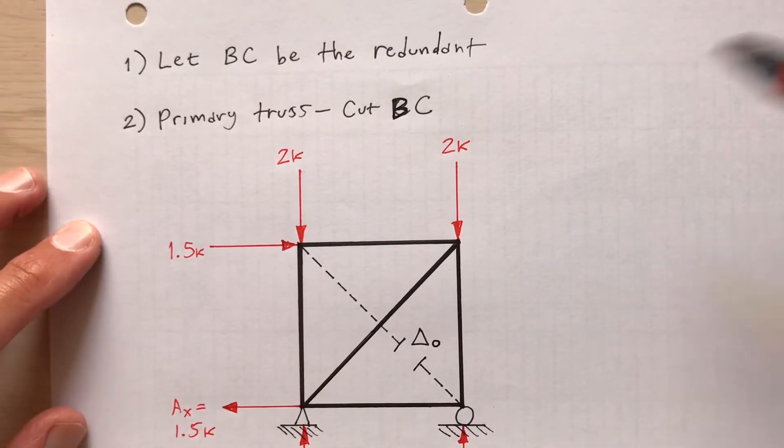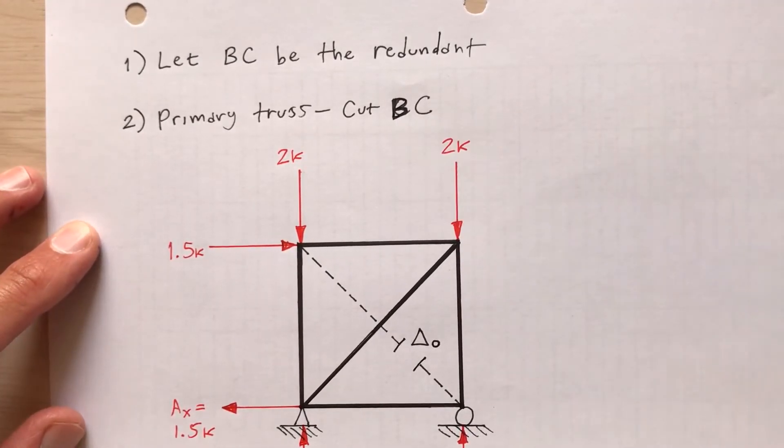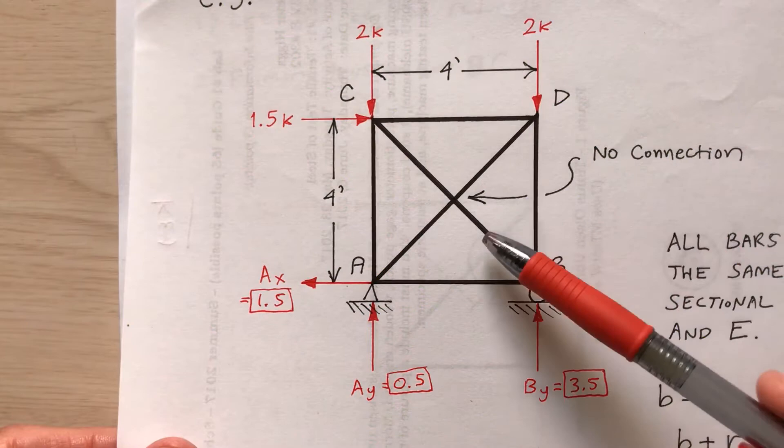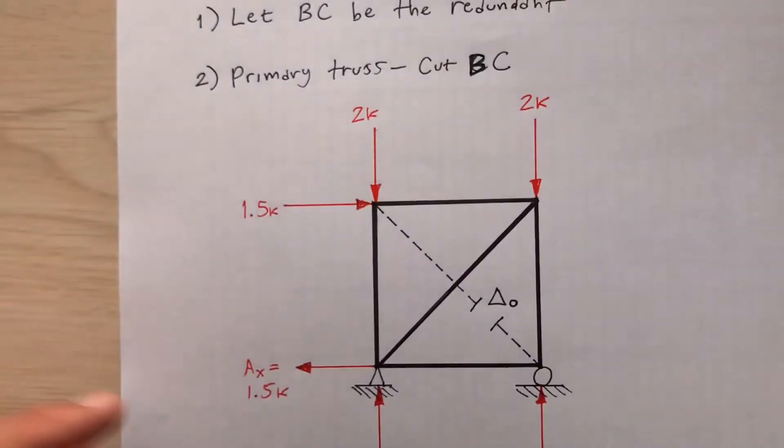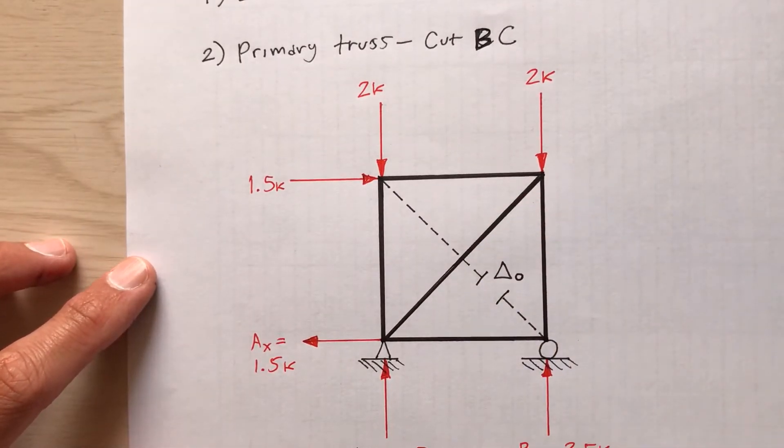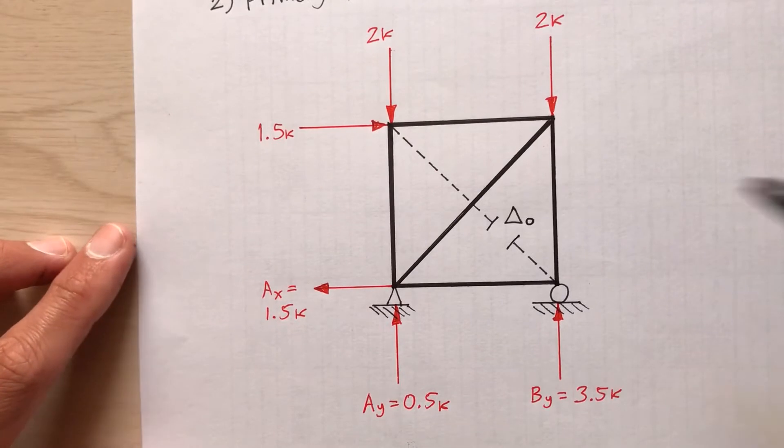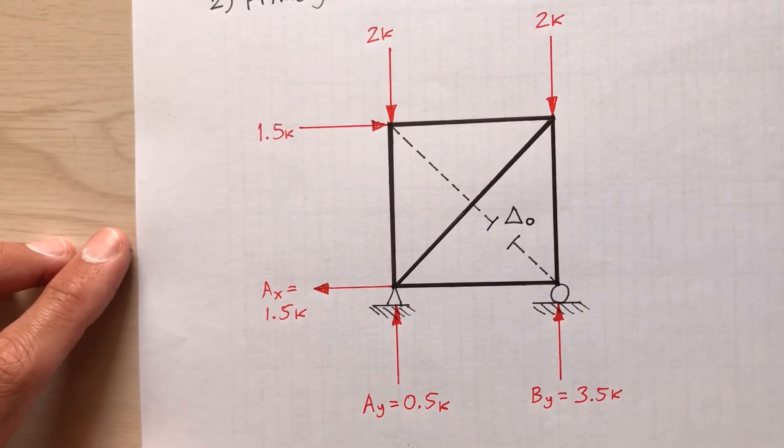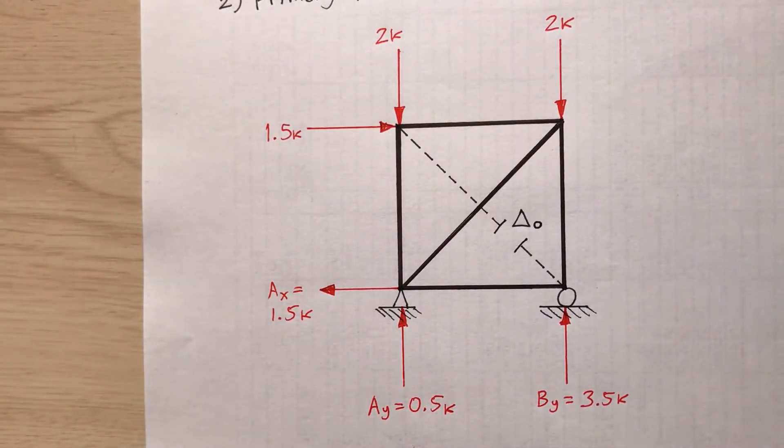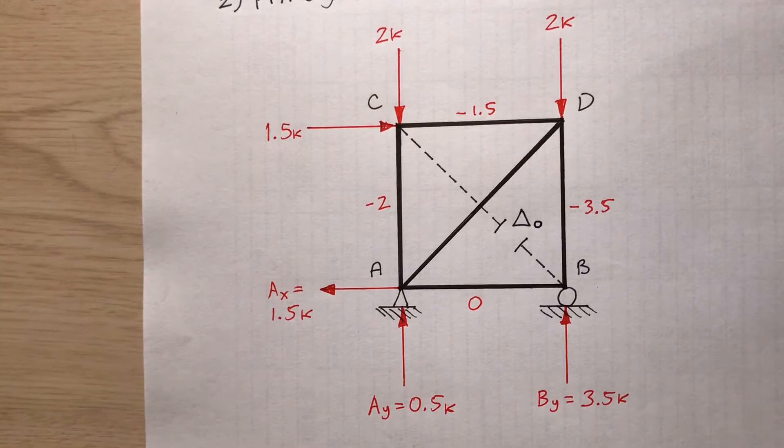Step two, primary truss, cut member BC. Imagine taking a hacksaw and cutting through member BC. And it's dashed because it's now a zero force member. And now when I cut it, it's going to open up a distance delta sub zero or delta naught. So now based on this, you notice that the external reactions are all the same loads. I didn't change any of those.